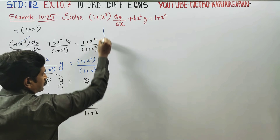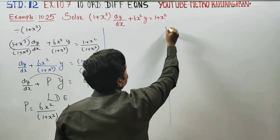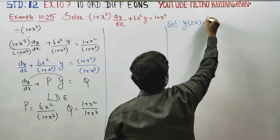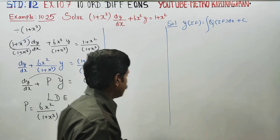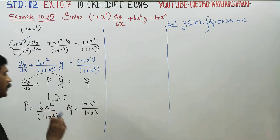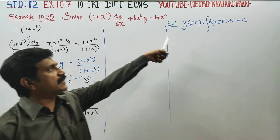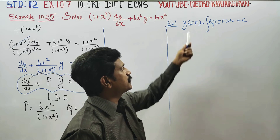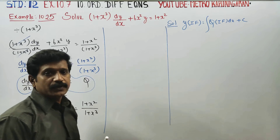This is the final answer structure for the linear differential equation in the form dy by dx plus Py equal to Q. The general solution is y into the integrating factor equals integration of Q into the integrating factor dx plus c.